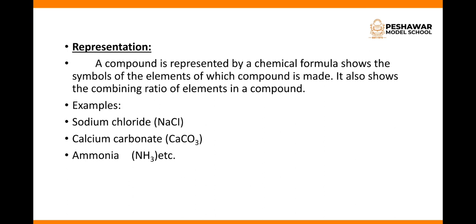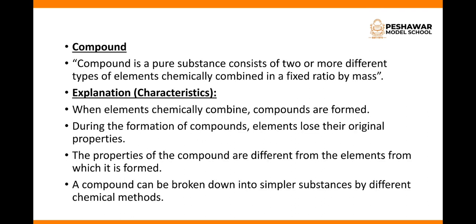Representation of compound: A compound is represented by a chemical formula which shows the symbols of elements of which the compound is made. It also shows the combining ratio of elements in a compound. Compound की जब हम explanation करते हैं तो हम कहते हैं कि compound जो है ये element से मिलके बनता है और जब ये बनता है तो ये अपनी original property — जो इसकी parent property होती है — इसको lose कर देती है और जो compound बन जाता है इसकी property इसके parent से बिलकुल अलग होती है।